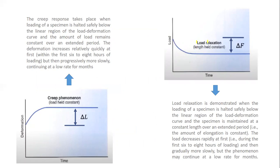In load relaxation, you apply a set change in length to the tendon and measure the force over time. As you hold the length constant, the load drops off — there is a change in force over time. This is called load relaxation: when you have displacement constant and you observe a drop in force as a result.